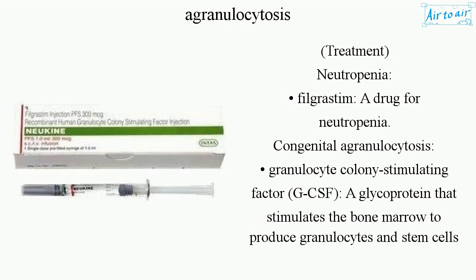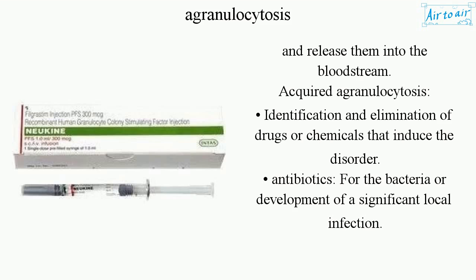Treatment: For neutropenia, filgrastim is a drug used. For congenital agranulocytosis, granulocyte colony-stimulating factor (G-CSF), a glycoprotein that stimulates the bone marrow to produce granulocytes and stem cells and release them into the bloodstream, is used. For acquired agranulocytosis, treatment involves identification and elimination of the drugs or chemicals that induce the disorder, along with antibiotics.